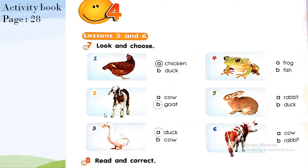Picture three — look at the picture, it's a duck. Number five: it's a rabbit or a duck? Look at the picture — it's a rabbit. Number six: it's a cow or a rabbit? It's a cow.